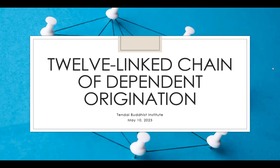One of the things I find interesting about this teaching is that in some stories about how the historical Buddha had his enlightenment experience under the Bodhi tree, the 12-linked chain of dependent origination is extremely important. This was actually the insight that led him to awakening. Because of this, the 12-linked chain of dependent origination is one of his most important teachings delivered to his followers.